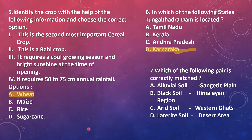Which of the following pairs is correctly matched? Alluvial soil in the Gangetic plain — that is correct. Black soil in the Himalayan region — that is wrong, because in the Himalayan region we have mountain soil; black soil is found in the Deccan region near the Western Ghats. Arid soil means desert soil, found in desert areas, not in the Western Ghats. Options B, C, and D are wrong. Option A is the right answer, correctly paired.